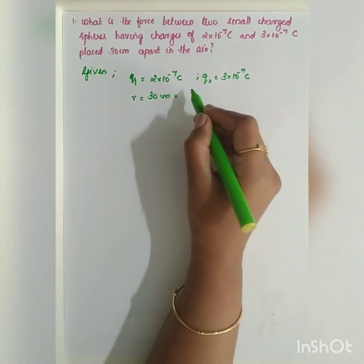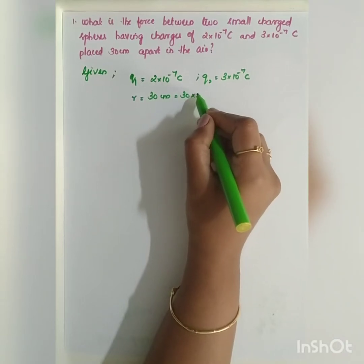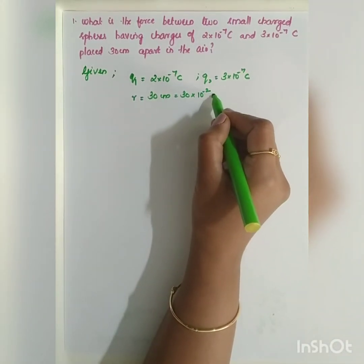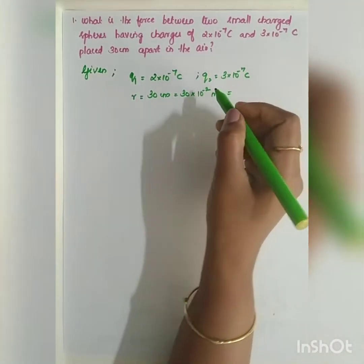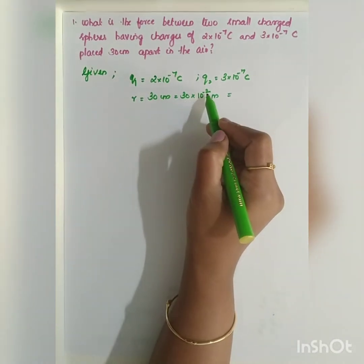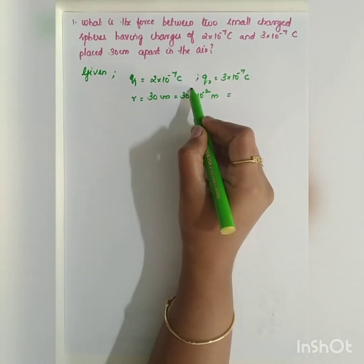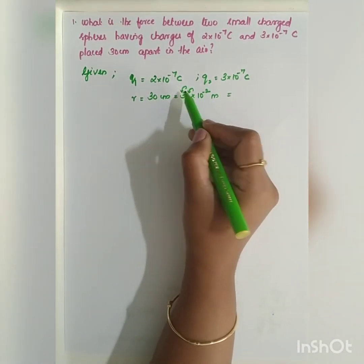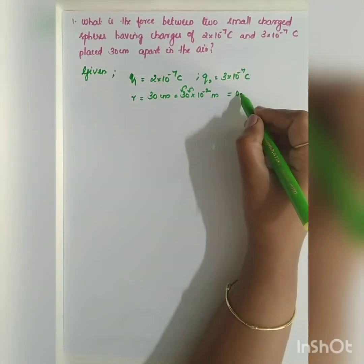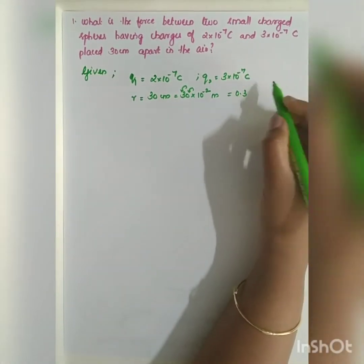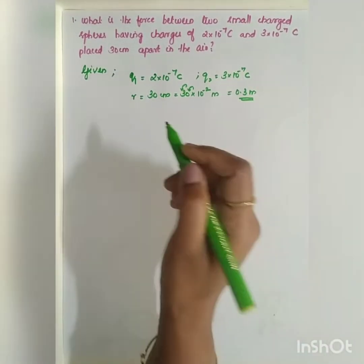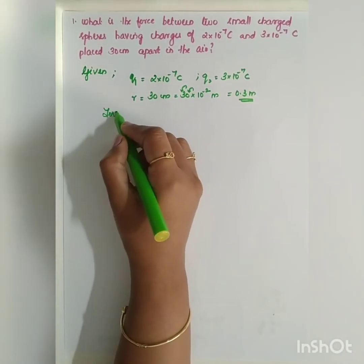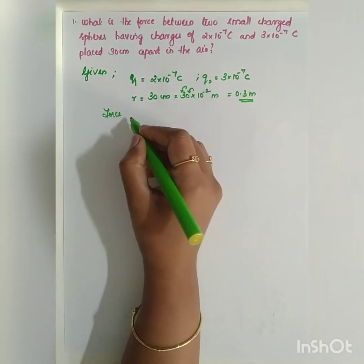30 centimeters can be written as 30×10⁻² meters. Since 10⁻² shifts the decimal point two places to the left, this becomes 0.3 meters. Now, what do we have to find? We have to find the force between the two charges.